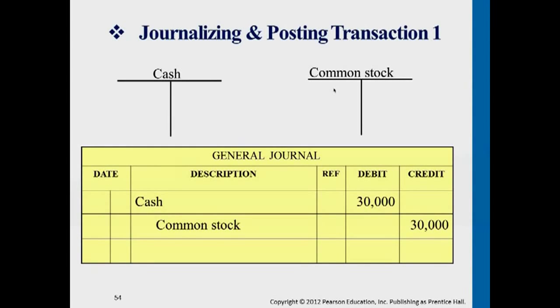If we have this journal entry, we'll be opening up a cash T account and a common stock T account, posting the debit side to the left side and the credit side to the right side.